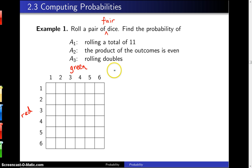So the first thing we're trying to do is find P of A1, which is the probability of rolling a total of 11. Well there are two different ways to do this, you can get a six and a five, or you can get a five and a six and that's how you get a total of 11.